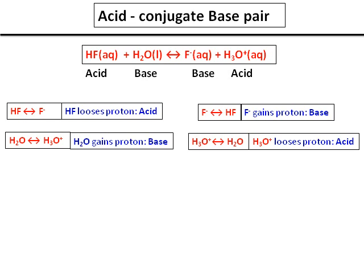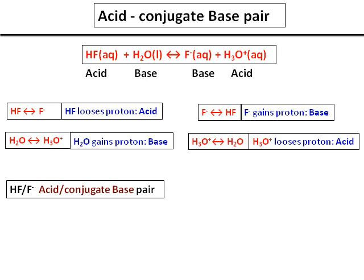In that equation, as written, HF is the acid reacting with the base, giving you another base and an acid. We pick up the pairs from the equation — the HF and F minus pair — and we call it the acid and its conjugate base.